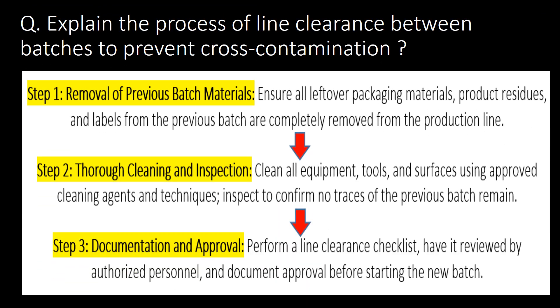Explain the process of line clearance between batches to prevent cross contamination. Step 1: Removal of previous batch materials. Step 2: Thorough cleaning and inspection. Step 3: Documentation and approval.